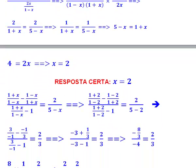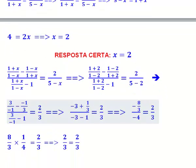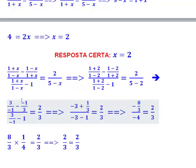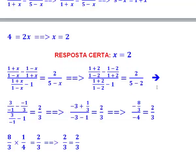Está certo isso? x igual a 2 — será que é a nossa resposta certa? A gente fez uma questão dessa; o que eu devo fazer? É só substituir, gente. Eu vou tirar o x e colocar no seu lugar o valor 2 — estou fazendo uma prova real para verificar se acertei. Substituindo na equação original: 1 mais 2 sobre 1 menos 2, menos 1 menos 2 sobre 1 mais 2, menos 1 é igual a 2 sobre 5 menos 2. Numericamente: 3 sobre menos 1 dá menos 3; menos com menos dá mais 1 terço. 3 sobre menos 1 dá menos 3; menos 1 dá menos 4. Aqui em cima: 3 vezes menos 3 é menos 9, mais 1 fica menos 8, então menos 8 terços sobre 4. Isso é igual a 2 terços. O segundo membro: 2 sobre 5 menos 2 dá 3, então dá 2 terços.